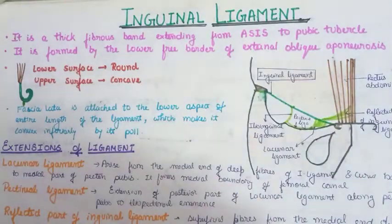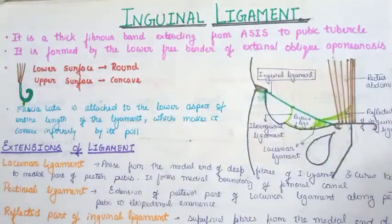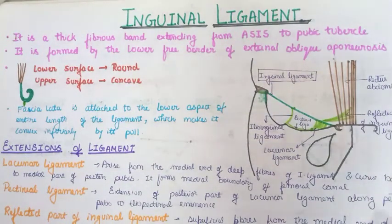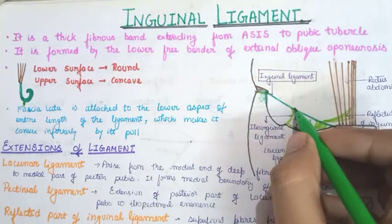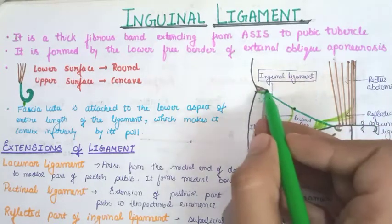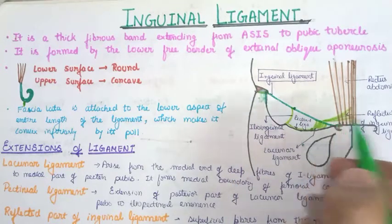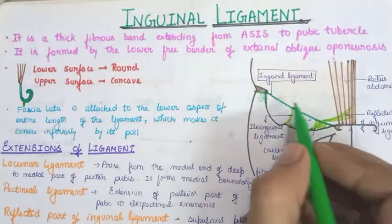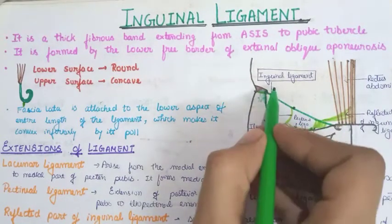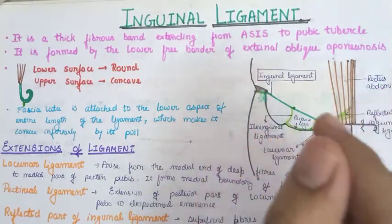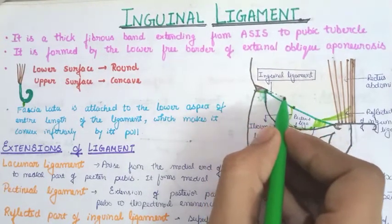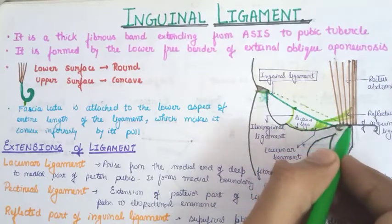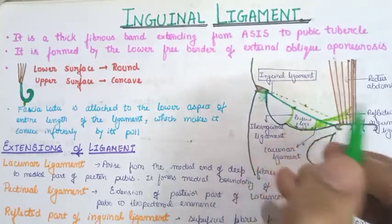Now let me explain the mid-point of the inguinal ligament versus the mid-inguinal point. The mid-point of the inguinal ligament is the actual center point of the inguinal ligament, which extends between the ASIS and the pubic tubercle. The mid-inguinal point, on the other hand, is the center of an imaginary line drawn from the ASIS to the pubic symphysis.